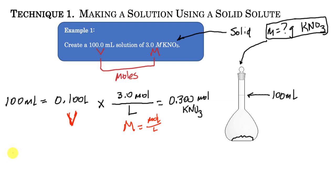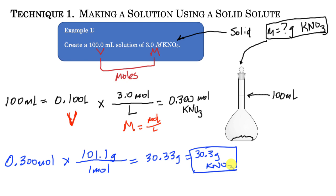From those 0.03 moles, I can determine the mass using the molar mass of potassium nitrate from the periodic table. That comes out to 3.03 grams. I add that mass to the volumetric flask, then pour in water all the way up to the 100 mL mark, giving me a 100 milliliter solution at the target concentration.